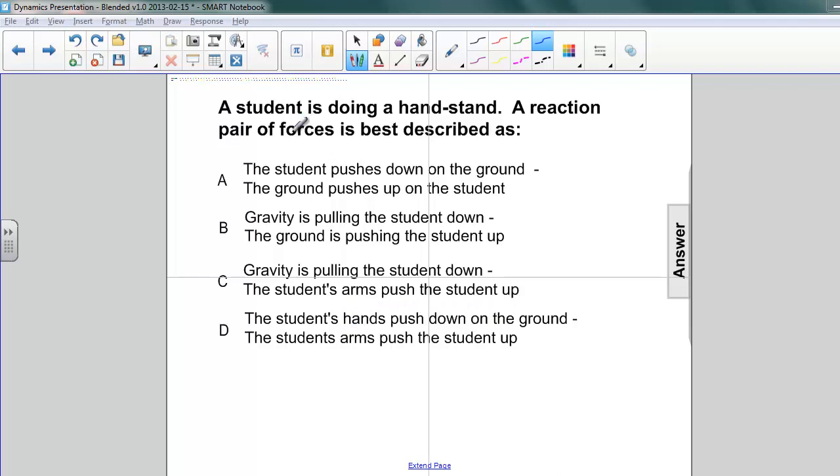and arms and students'. So the only one that has a symmetry of student, ground, ground, student is A.